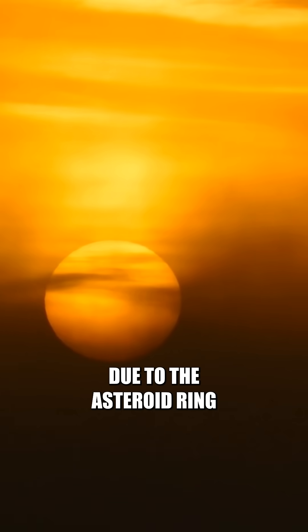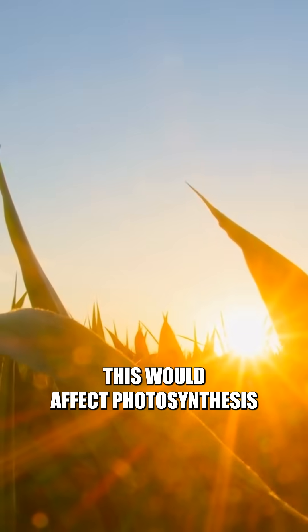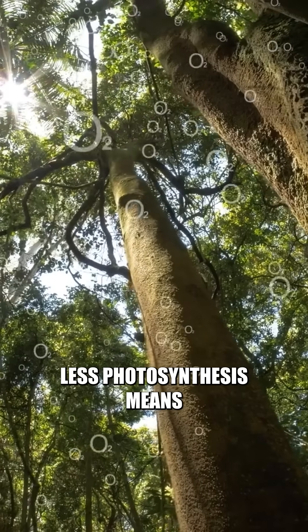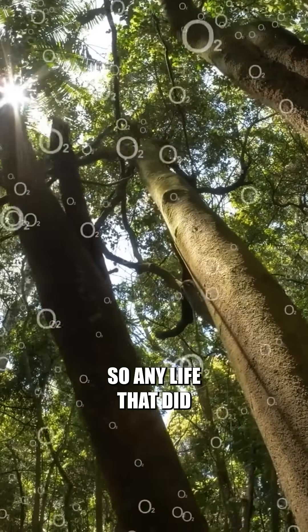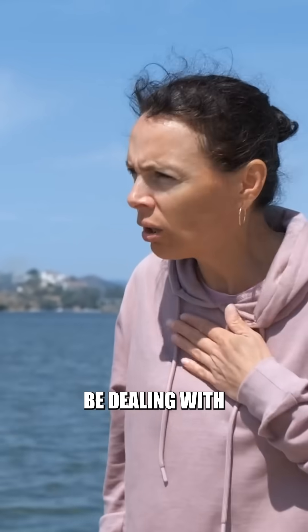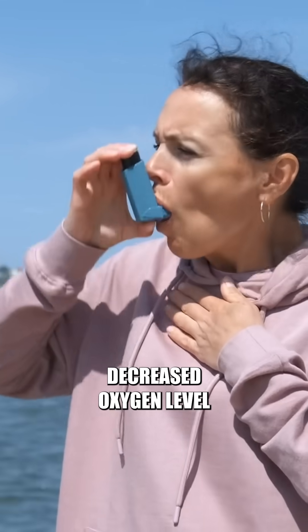We wouldn't be getting as much light due to the asteroid ring blocking out portions of the sun's rays. This would affect photosynthesis. Less photosynthesis means less oxygen. So, any life that did survive would now be dealing with trying to breathe and survive with Earth's decreased oxygen level.